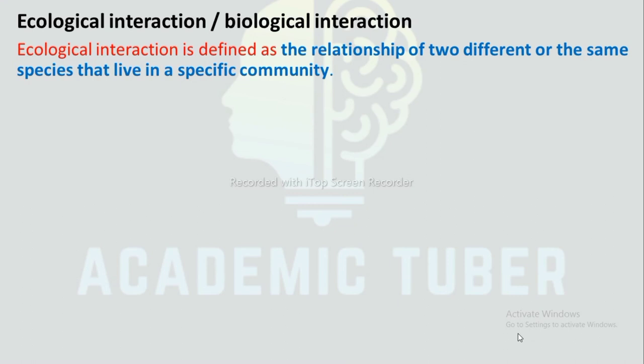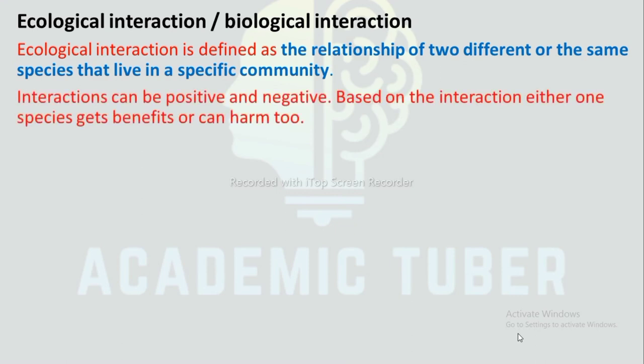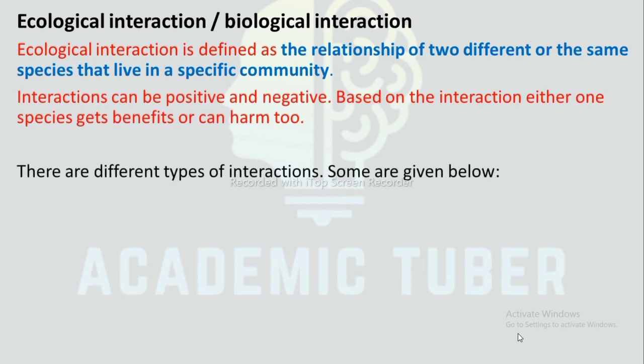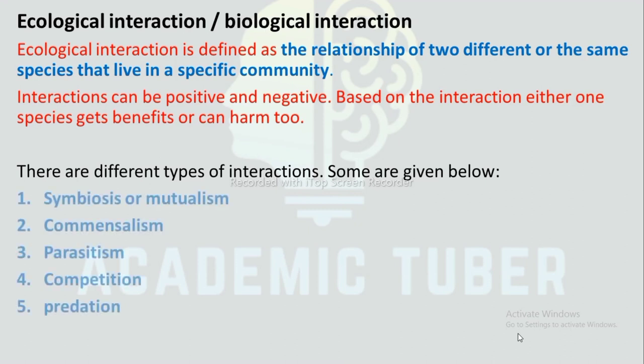Ecological interaction or biological interaction is defined as the relationship of two different or the same species that live in a specific community. Interaction can be positive or negative; based on the interaction, either one species gets benefits or can be harmed. There are different types of interactions: symbiosis or mutualism, commensalism, parasitism, competition, and predation.